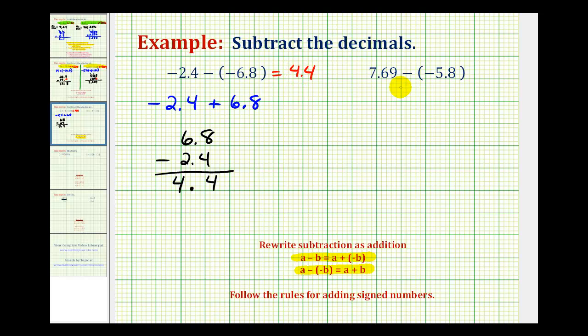Looking at our second example, we have positive 7.69 minus negative 5.8. Again, subtracting a negative is the same as adding a positive. So as an addition problem, we would have 7.69 plus positive 5.8.